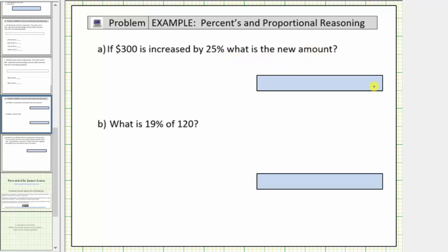So we'll use this bar to determine 25% of 300 and then we'll add that amount to 300 to determine the new value. We'll label the dollar values along the bottom and the percents along the top. So we'll label the far left of the bar zero dollars and the far right $300.